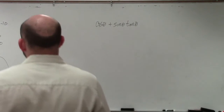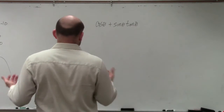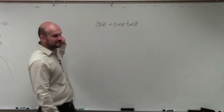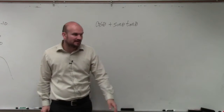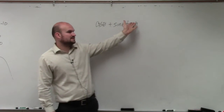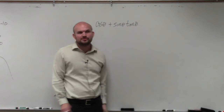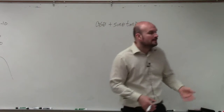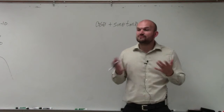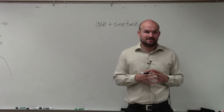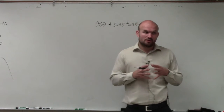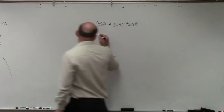So as you guys are looking at this problem, a lot of times students want to say let's try to rewrite this — 1 over secant, 1 over cosecant, rewrite that as 1 over tangent, and so forth. There are many different things you could do. My advice is if you get stuck on anything, always rewrite things in terms of sines and cosines, because all those trigonometric identities you can always write in terms of sines and cosines.